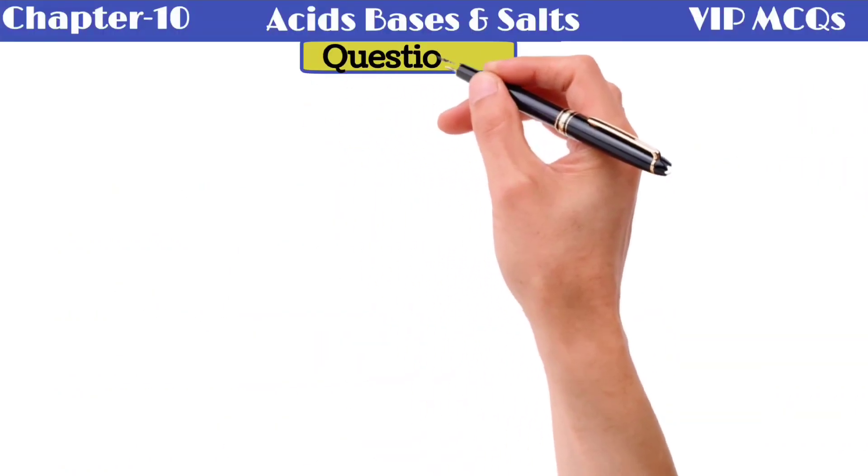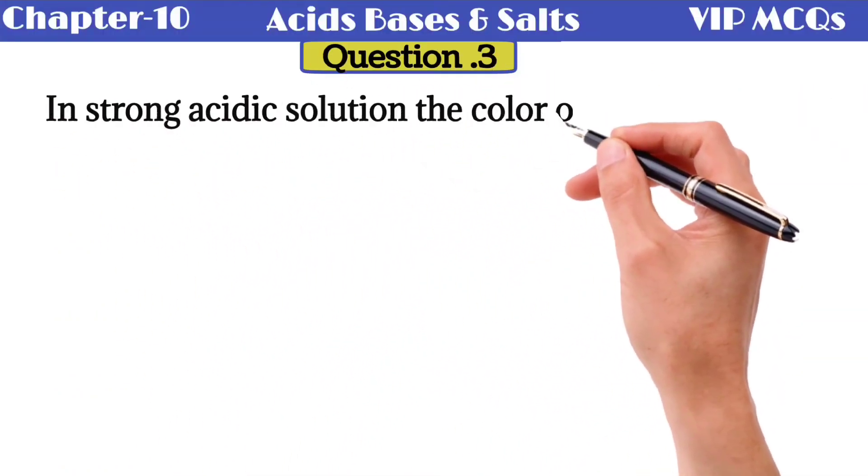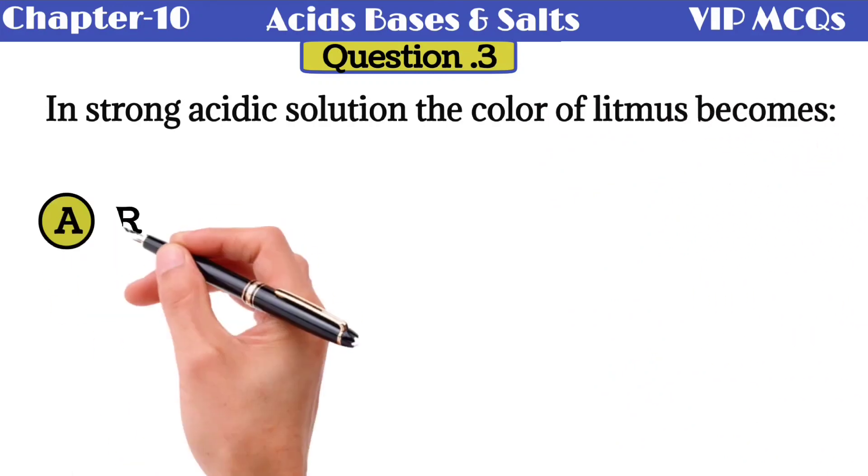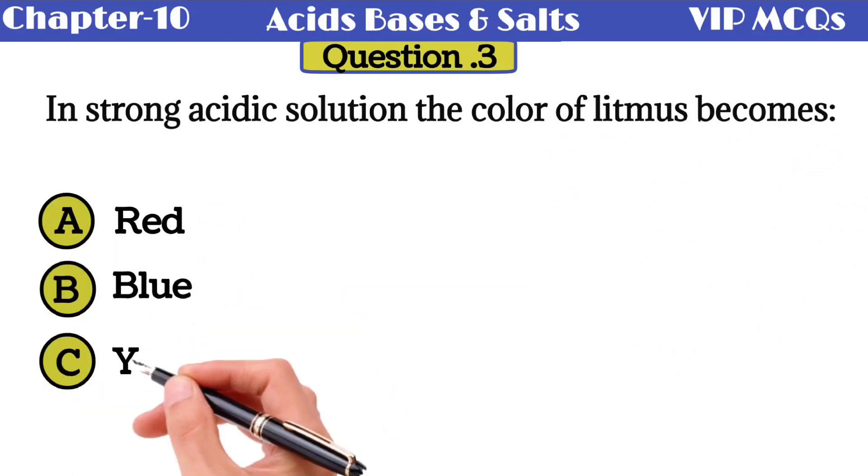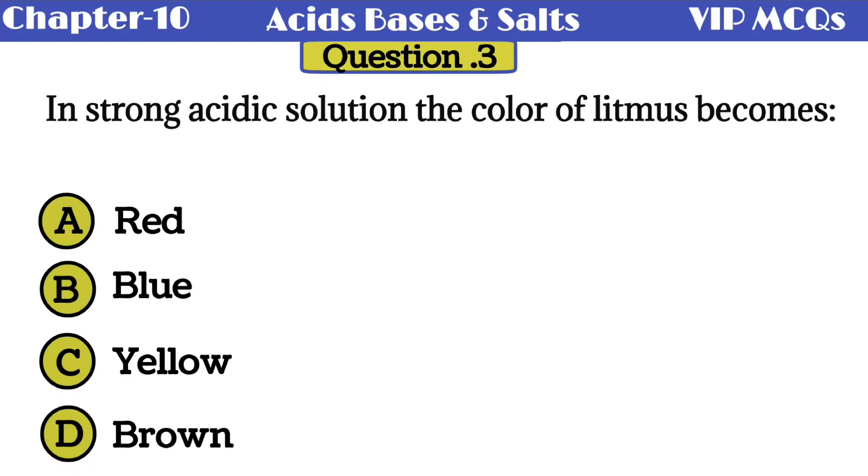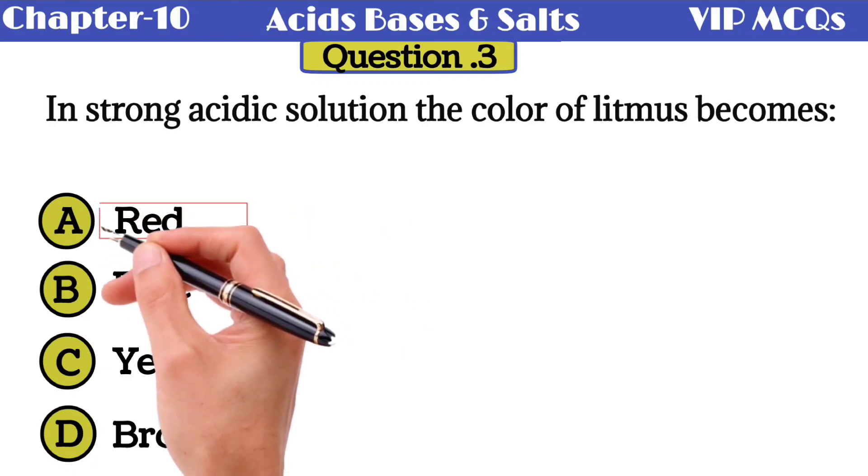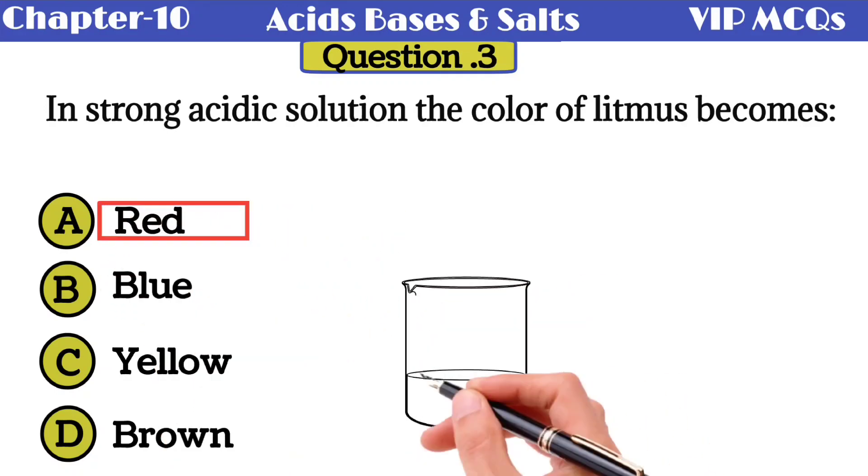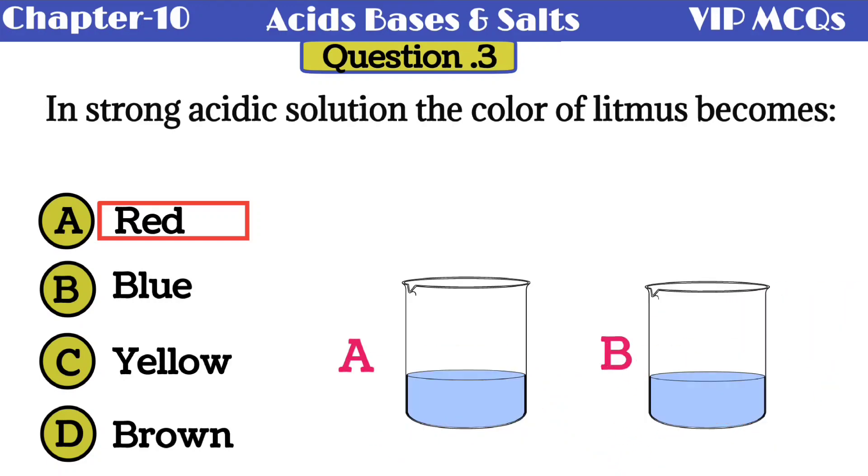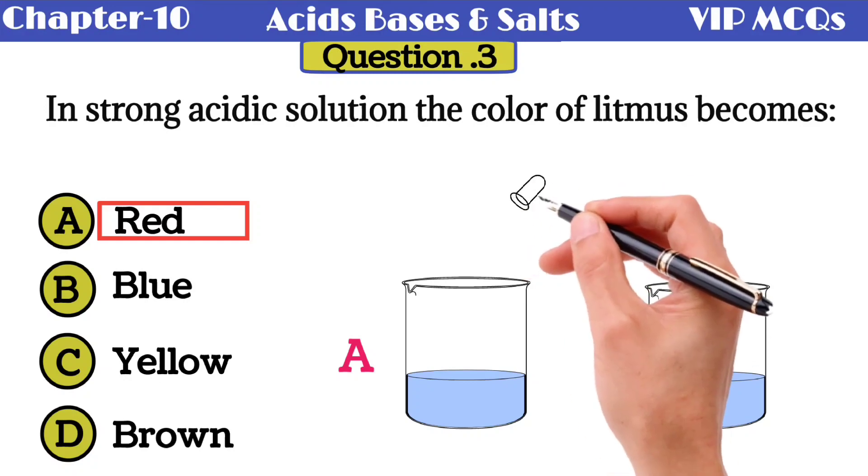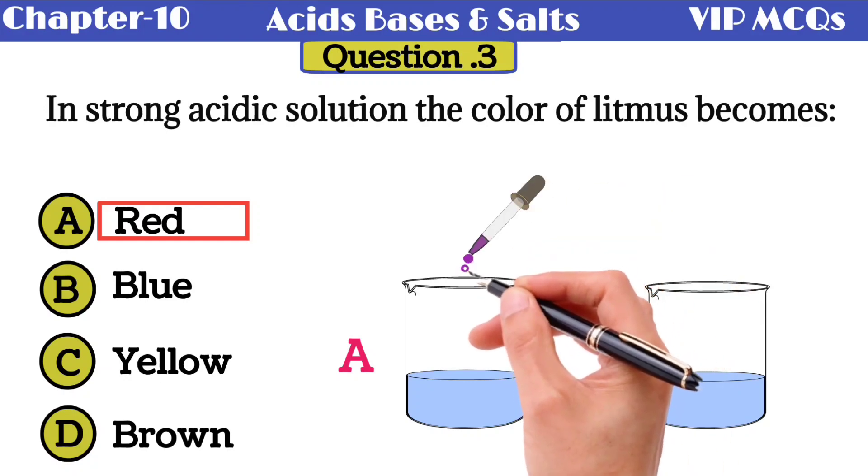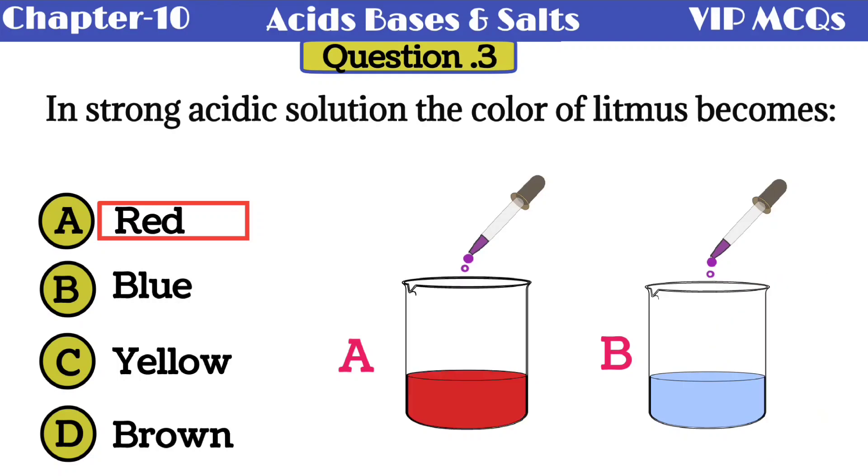Question number 3: in a strong acidic solution the color of litmus becomes - option A red, option B blue, option C yellow, and option D brown. The correct option is red. For example, we have two solutions A and B, and we want to identify which solution is acidic and which one is basic. Add a few drops of litmus in both solutions. If the color of solution turns red, it indicates that solution is an acid. If the color changes to blue, it indicates that the solution is a base.